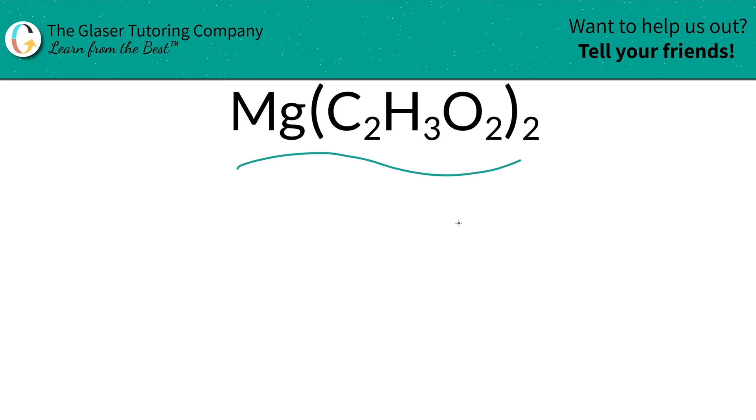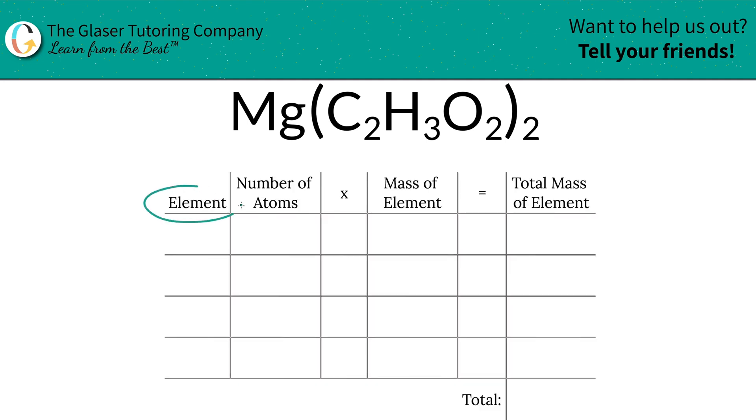I have a nice little table to help us out. The first step is to write down the individual elements we see in the compound. So we've got magnesium, carbon, hydrogen, and oxygen.